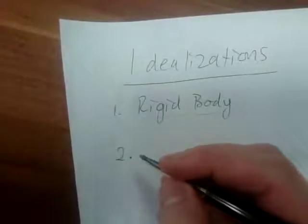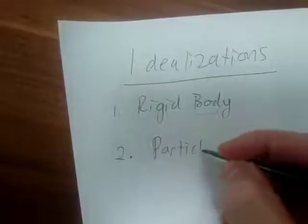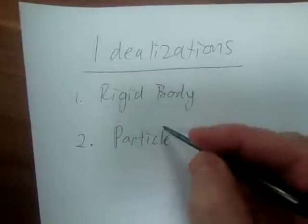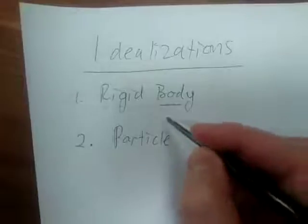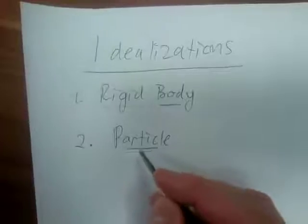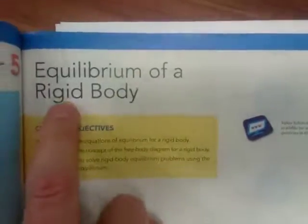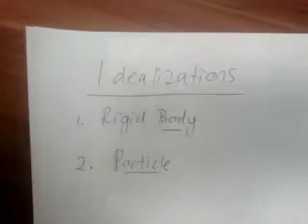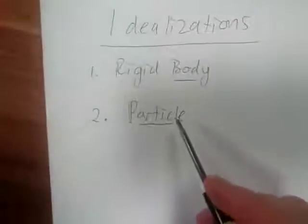The next idealization, found on page five of the textbook, is a particle. This is very important. The textbook actually studies two different things: bodies and particles. For example, chapter three covers 'Equilibrium of a Particle' and chapter five covers 'Equilibrium of a Rigid Body.' Both deal with equilibrium, but one is for a particle and the other is for a rigid body. Please take note that we look at both bodies and particles in this course.